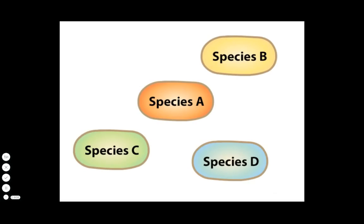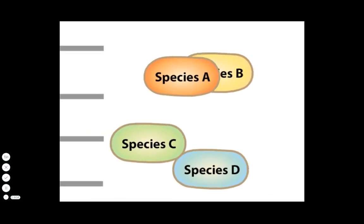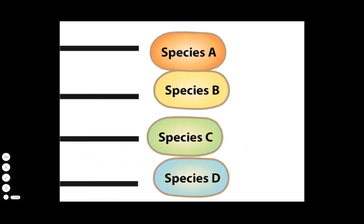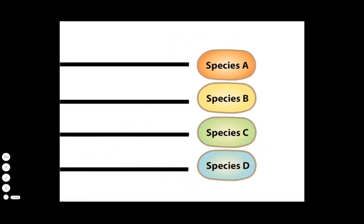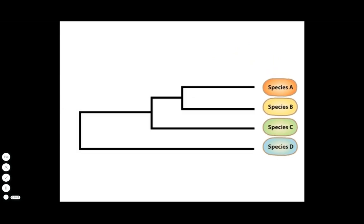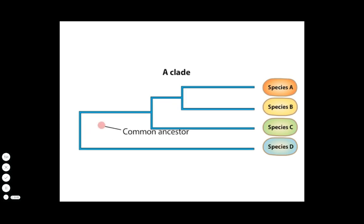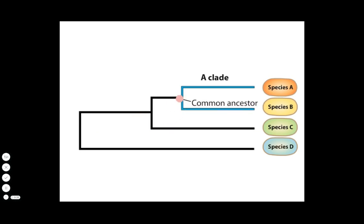Phylogeny is the history of the relatedness of organisms. Phylogeny generates a series of branching groups of related organisms called clades. Each clade is a group of species that share a common ancestor. Each clade branches into smaller clades and, ultimately, species.